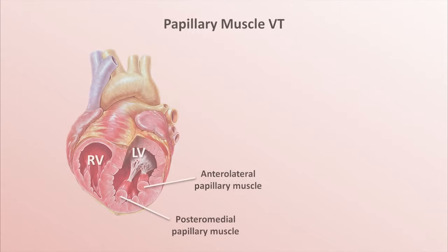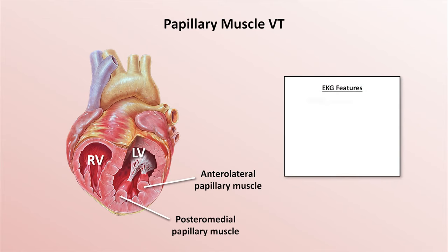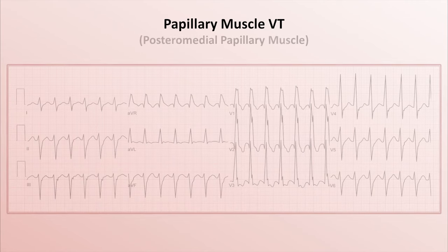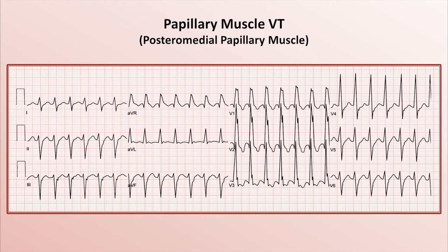Although there are five papillary muscles in the heart, almost all papillary muscle VTs originate from the two within the left ventricle. EKG features include a right bundle branch block pattern in V1, a QRS width of at least 130 ms — sometimes much longer — and R-wave notching in V1 to V3 or later. The QRS axis depends on which muscle is involved. VTs from the posterior medial papillary muscle have a superior or leftward axis, while VTs from the anterior lateral papillary muscle have an inferior axis. Here's an example of posterior medial papillary muscle VT: tall R in V1, QRS width over 130 ms, R-wave notching in V1 through V3, and an inferior axis.